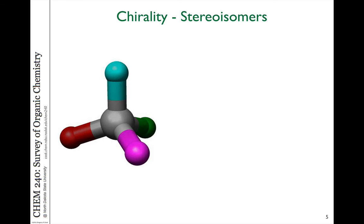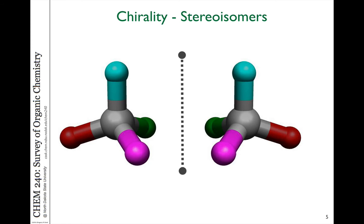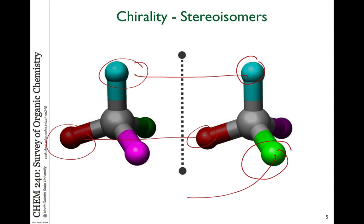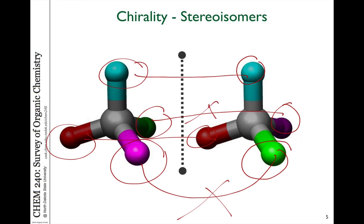Carbon is tetrahedral when sp3 hybridized. If I look at a carbon atom that has four different groups — indicated here by four different colors — and take its mirror image, we notice differences between these molecules. If you rotate the mirror image and try to slide it over, the molecules are not identical — they are not superimposable. While the blue lines up with blue and red with red, what's coming out towards you is green, which would overlap with purple if you tried to superimpose them. So these are two different stereoisomers related as mirror images — an example of enantiomers.